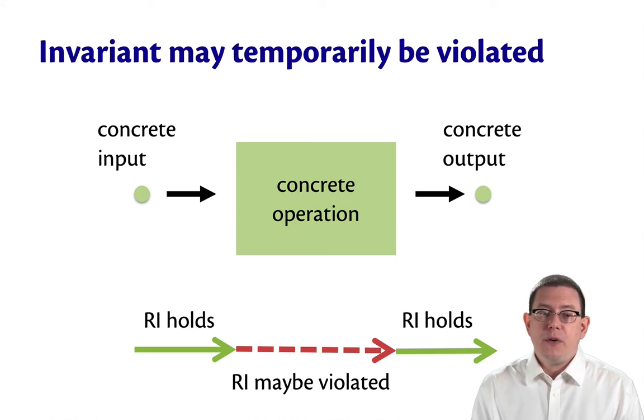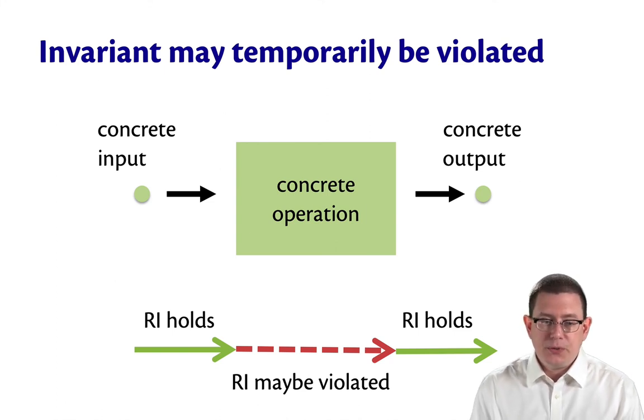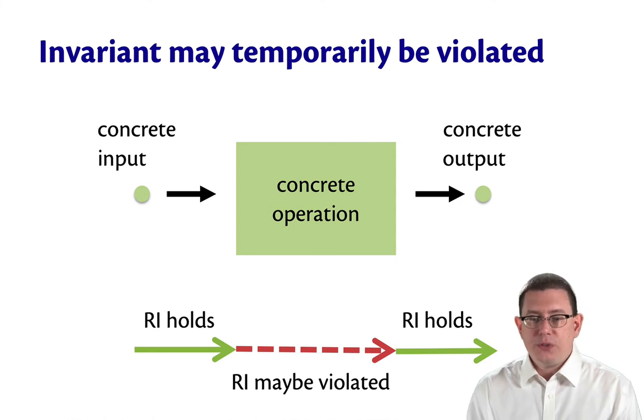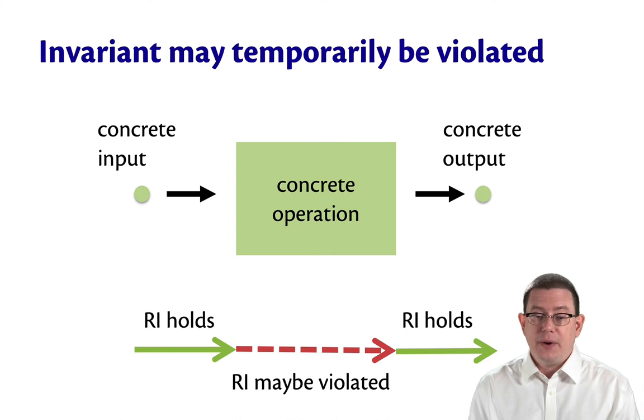Think about this in terms of the input and the output to a concrete operation. There's a concrete input and a concrete output. We're guaranteed that the rep invariant holds for the concrete input, and that it holds for the concrete output. That's the precondition and postcondition nature of the rep invariant.